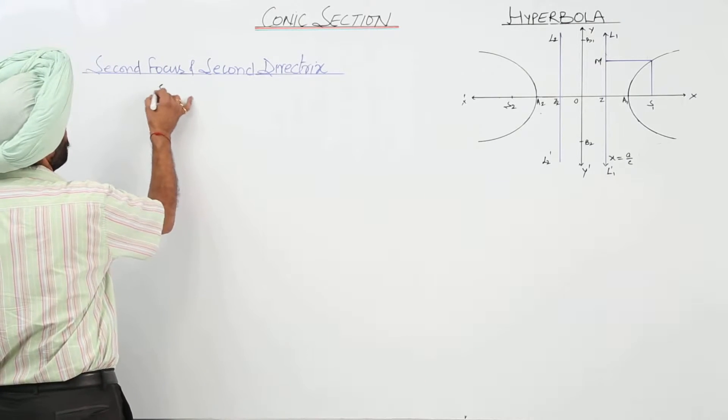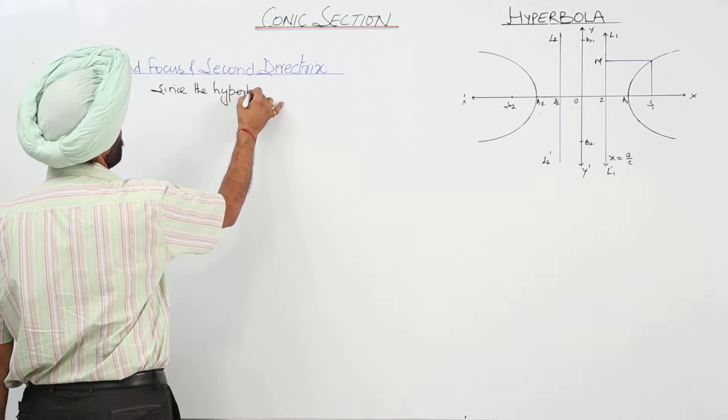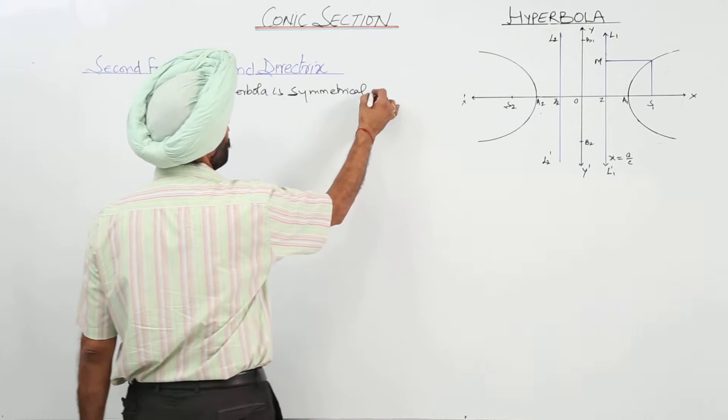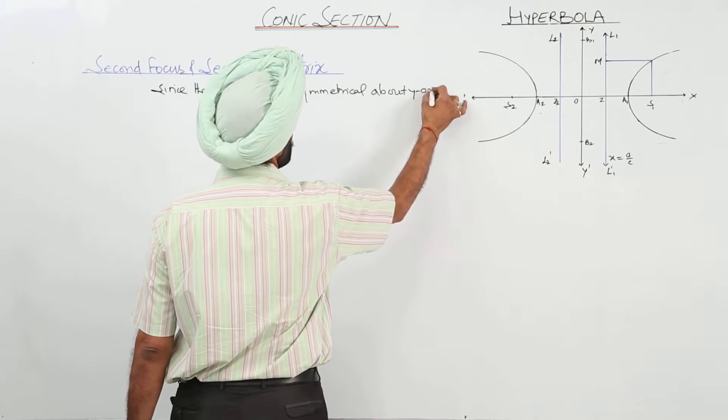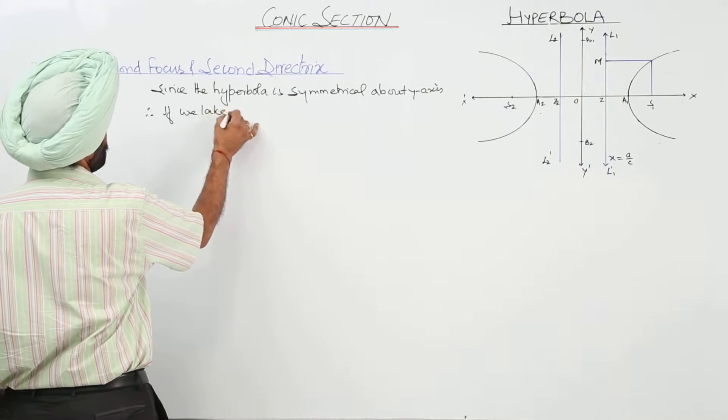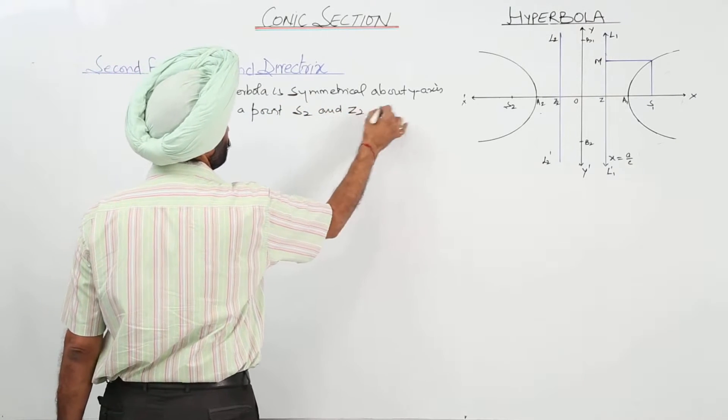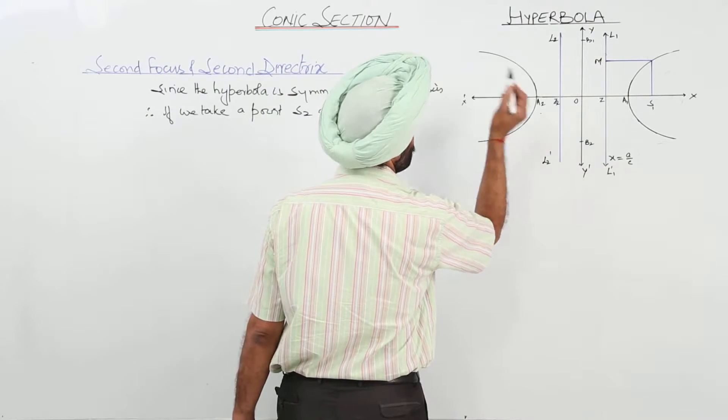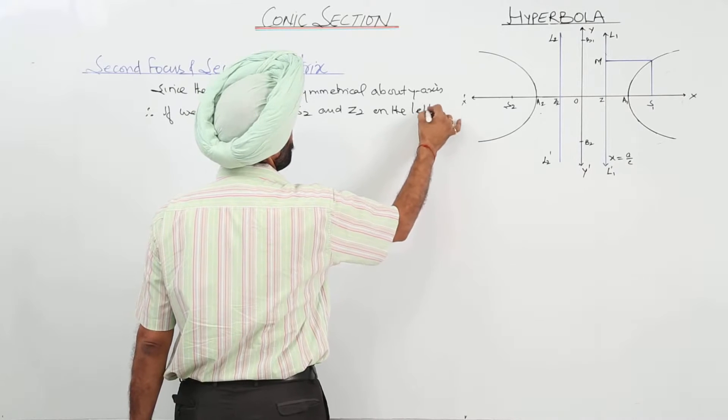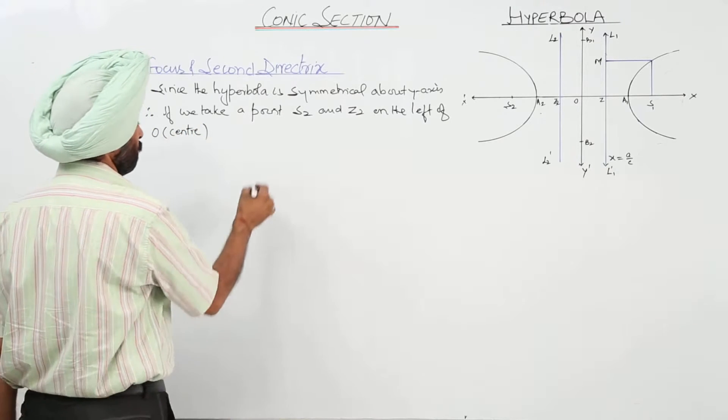Since the hyperbola is symmetrical about the y-axis, therefore if we take a point S2 and Z2, I have taken here S2, Z2. If we take a point S2 and Z2 on the left of O - what is O? Centre.